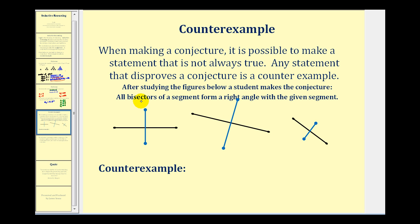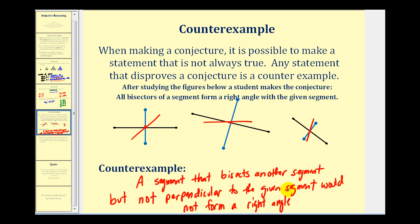Notice that this problem says bisectors, not perpendicular bisectors. So a counterexample for any of these three would be a segment passing through this point here, that's not perpendicular to the black segment. So this red segment here would be three counterexamples disproving this student's conjecture. We could state the counterexample as a segment that bisects another segment, but is not perpendicular to the given segment, would not form a right angle with the other segment. This statement disproves the conjecture, and therefore is a counterexample.